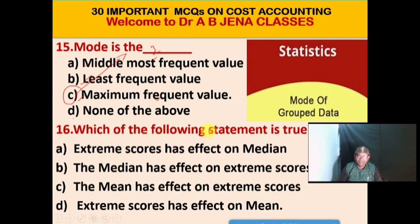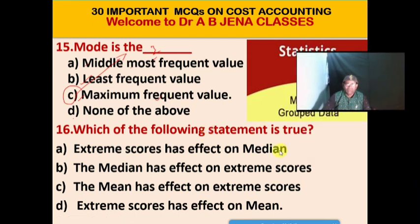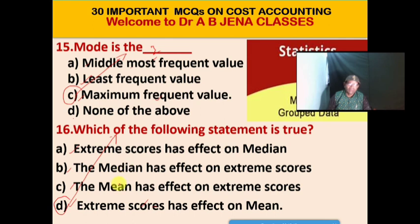Next MCQ: Which of the following statements is true? A. Extreme scores have an effect on median. B. Median has an effect on extreme scores. C. Mean has an effect on extreme scores. D. Extreme scores have an effect on mean. D is the right option. Extreme scores have an effect on mean — this is the correct and true statement.